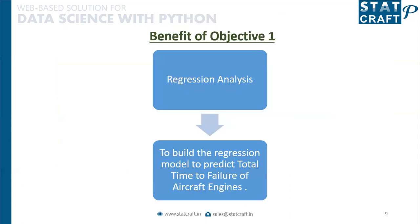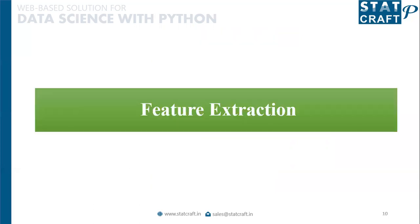The conclusion of this analysis is that we have performed a regression analysis and built a regression model to predict the total time to failure of the aircraft engine. This addresses the first objective. Now let me show you another example of feature extraction, which is a very important technique especially when you have many independent variables and you are not sure which are most important in contributing to total time to failure.